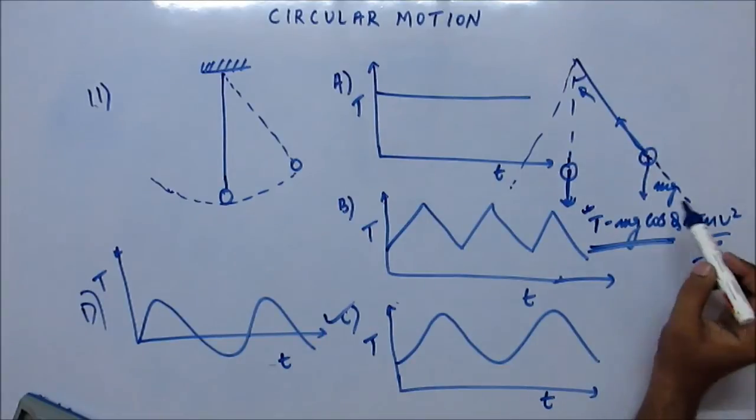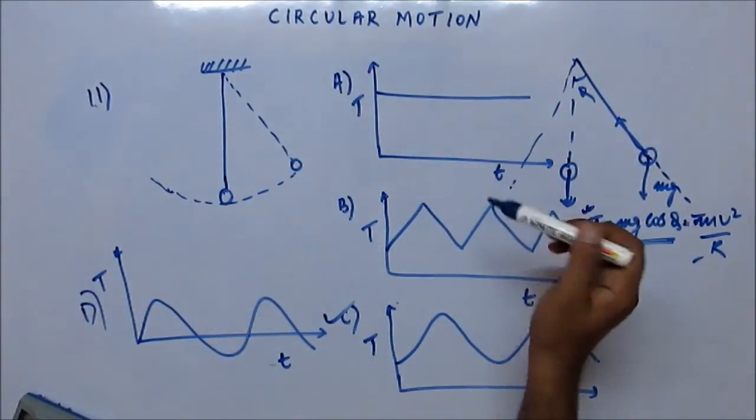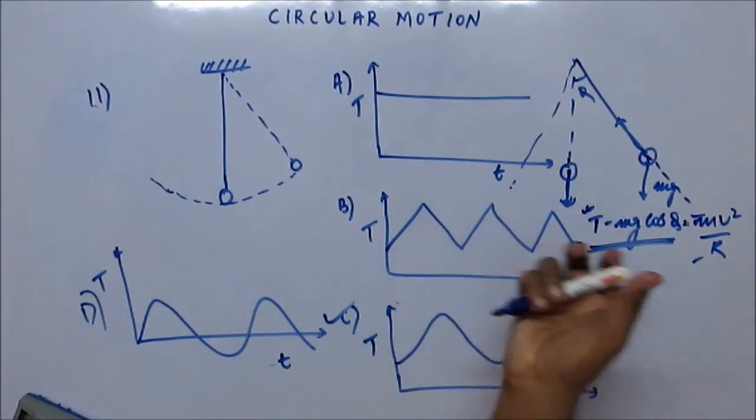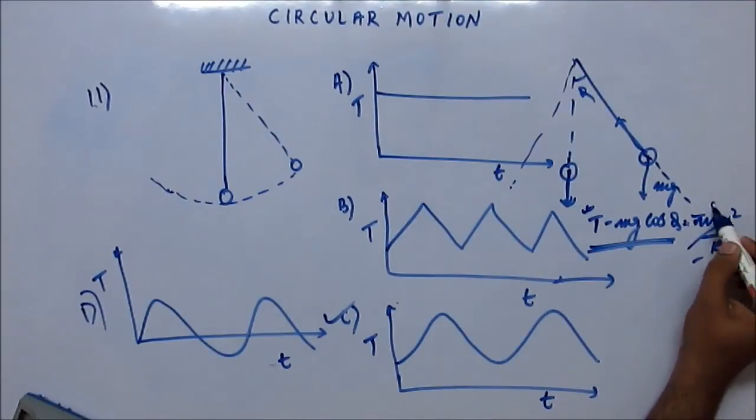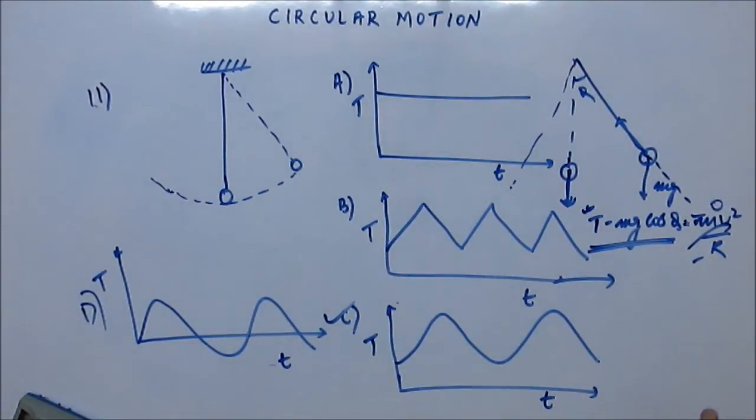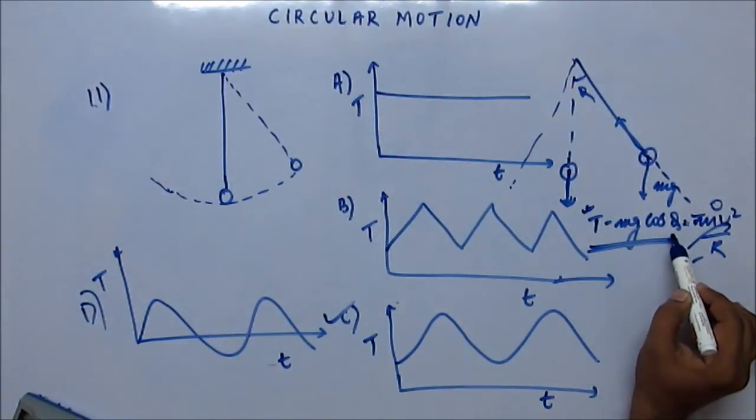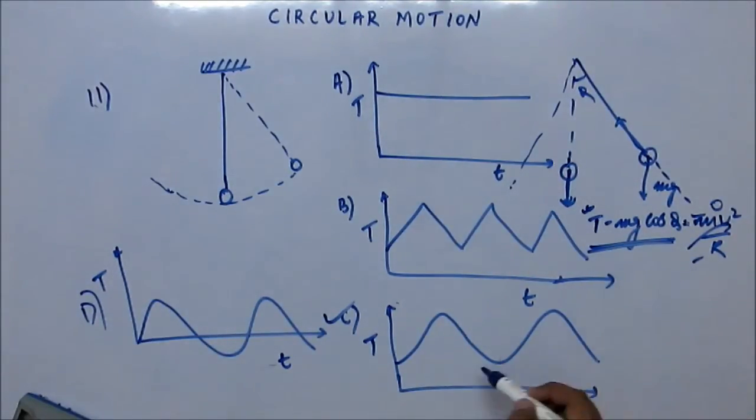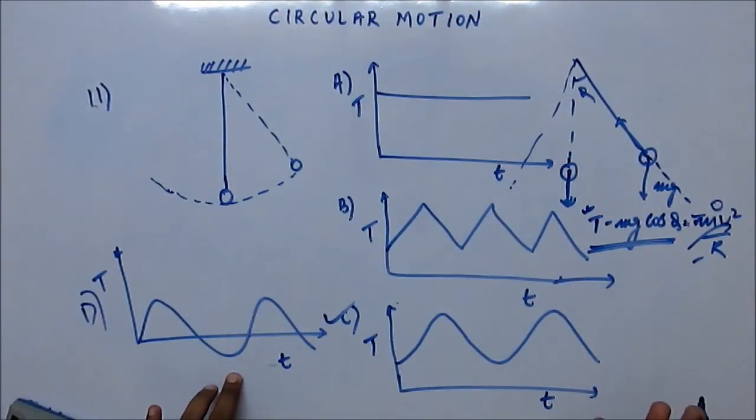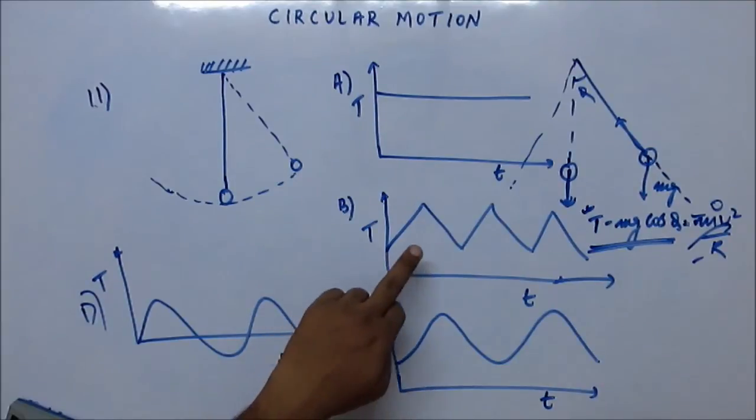But at no point tension will be zero. Because even at the top, the velocity momentarily will become zero before coming down. Right hand side will become zero, so left hand side should also be zero. So T is equal to Mg cos theta, and that will not be zero. So tension should not become zero, and forget about being negative. There is no meaning of negative tension. So this graph is absurd. The tension will not go on negative side.